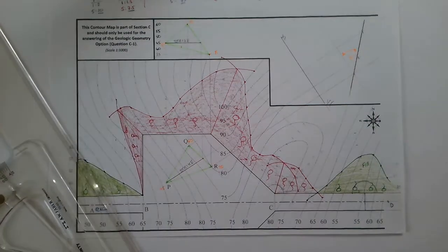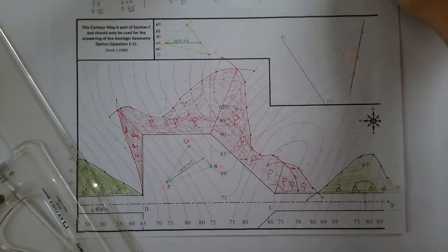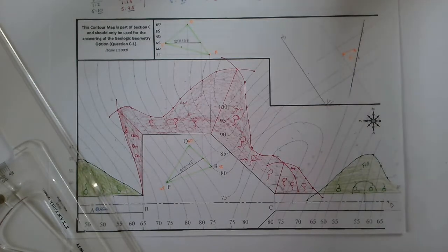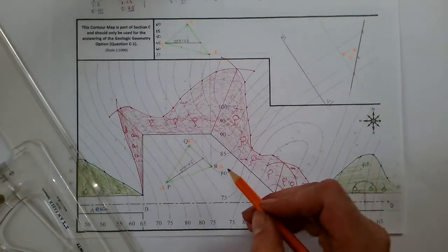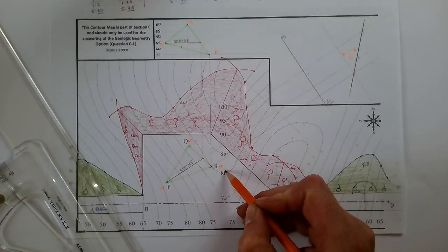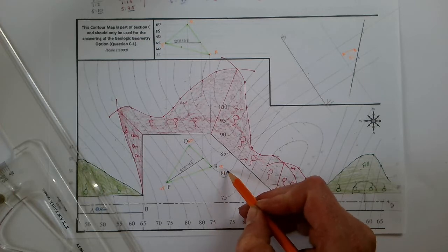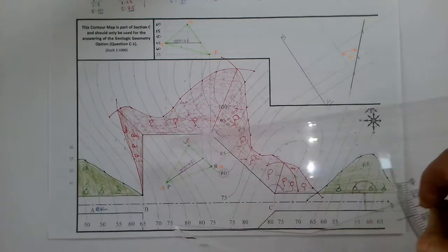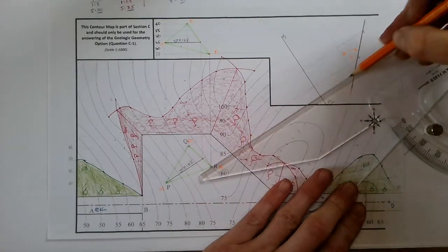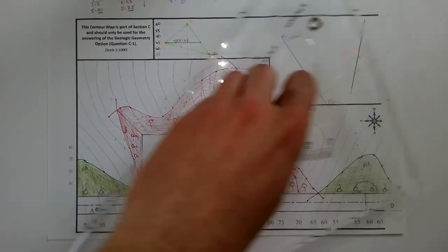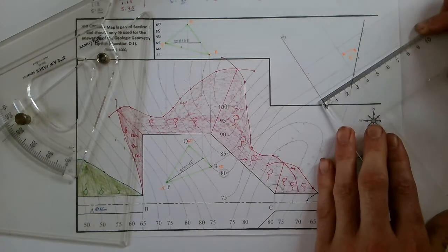Now, the final part to that question is to find the length of the shortest skew borehole from R to the surface. So we know point R is down here, it's right on the 80 contour. So what I'm going to do is extend this line R up, and I'm going to measure it to be a height of 80.